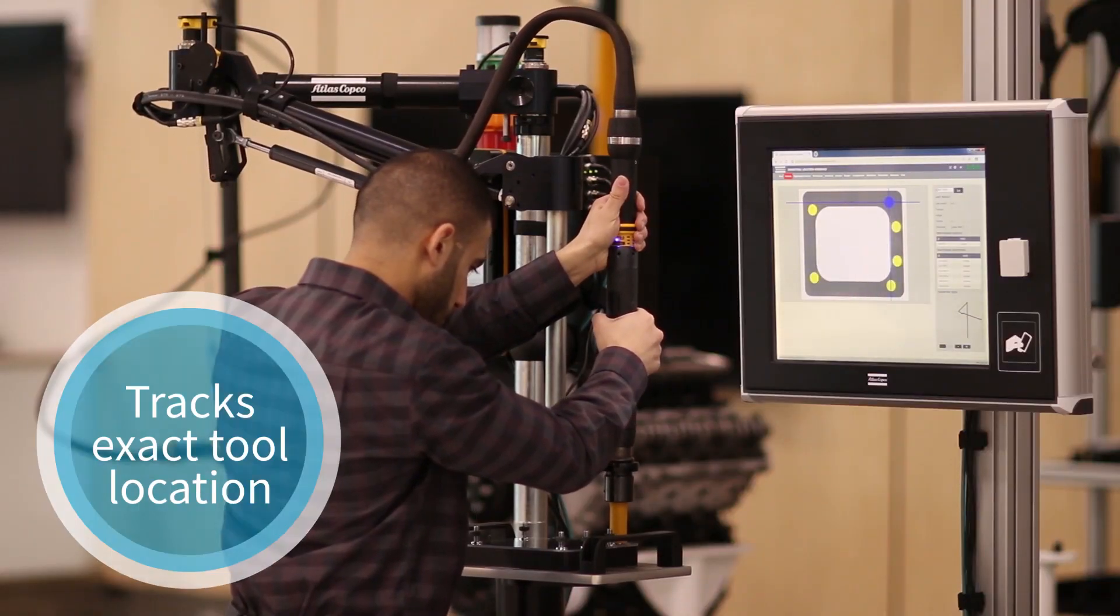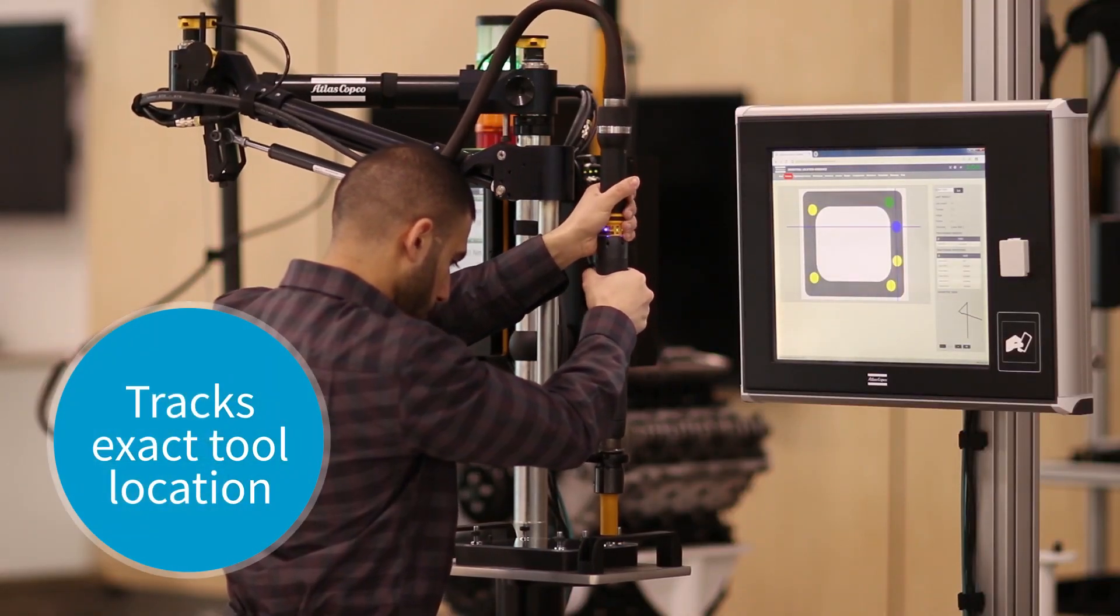ILG works by tracking the exact location of the tool, relative to the desired fastening position.